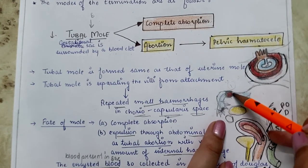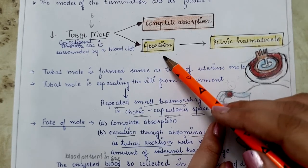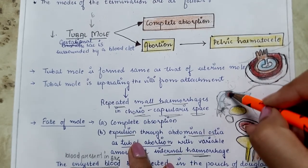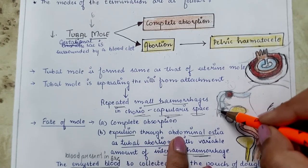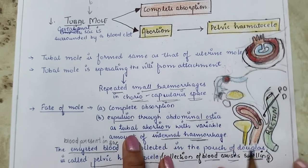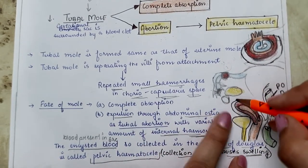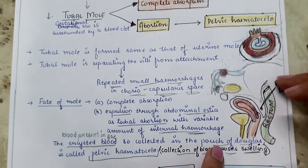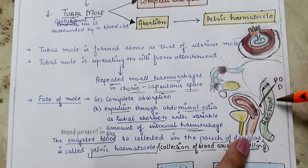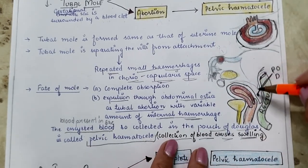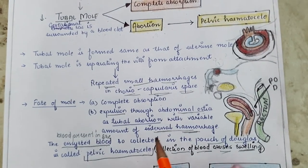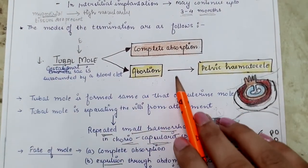In tubal abortion, the tubal mole is expelled through the abdominal ostia of the fallopian tube. The expelled content collects in the pouch of Douglas — the pocket-like space between the rectum and uterus — causing swelling in the pelvic area known as pelvic hematocele. Complete tubal abortion therefore leads to pelvic hematocele.